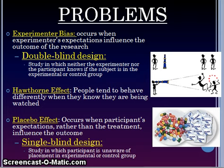Some problems with experimental research include experimenter bias, which occurs when the experimenter's expectations influence the research. To get around this, there is what's called a double blind study — a study in which neither the experimenter nor the participant knows which is the experimental or the control group. Another problem is the Hawthorne effect, where people tend to behave differently when they know they're being observed, so you might not get actual normal behavior. Then there is the placebo effect, which occurs when participants' expectations rather than the treatment influence the outcome. To address this, a single blind study is used, in which the participant is unaware whether they're in the experimental or the control group.